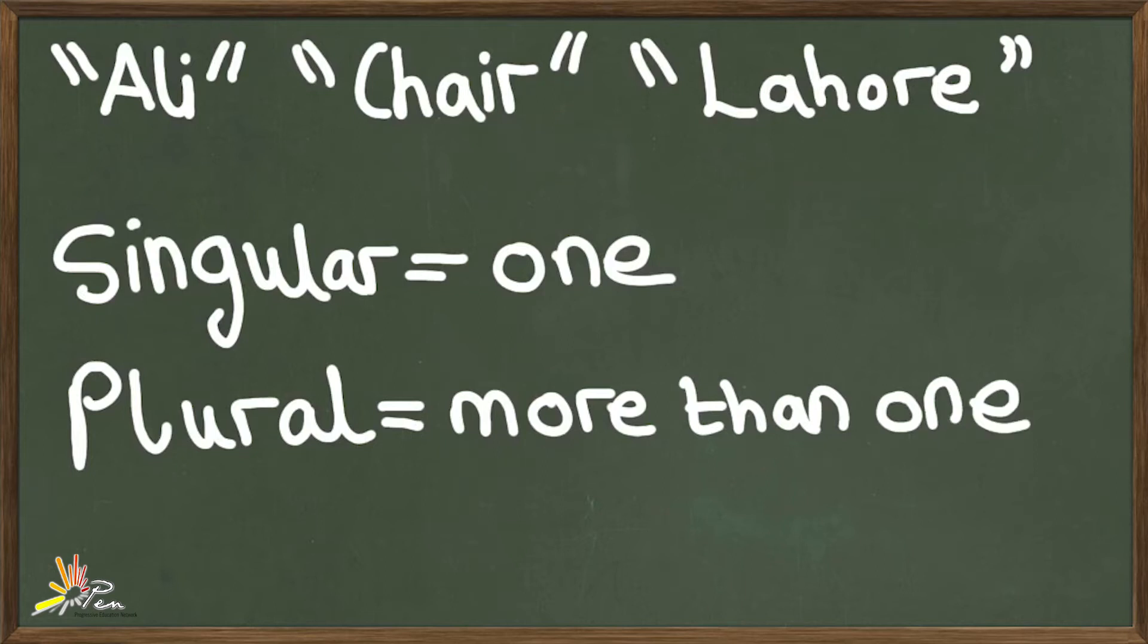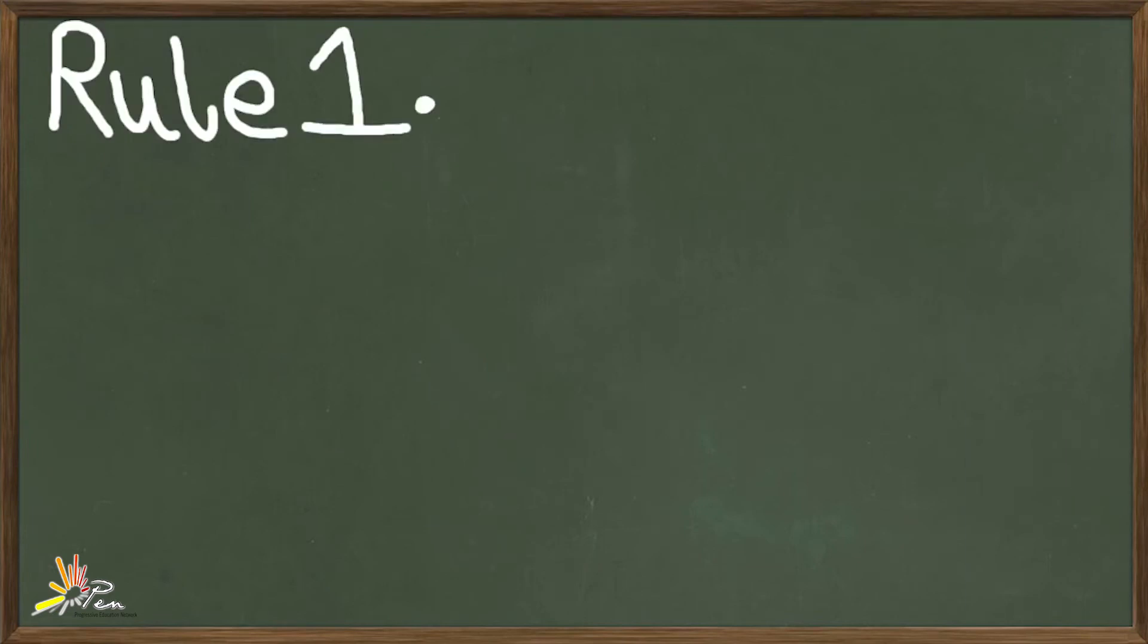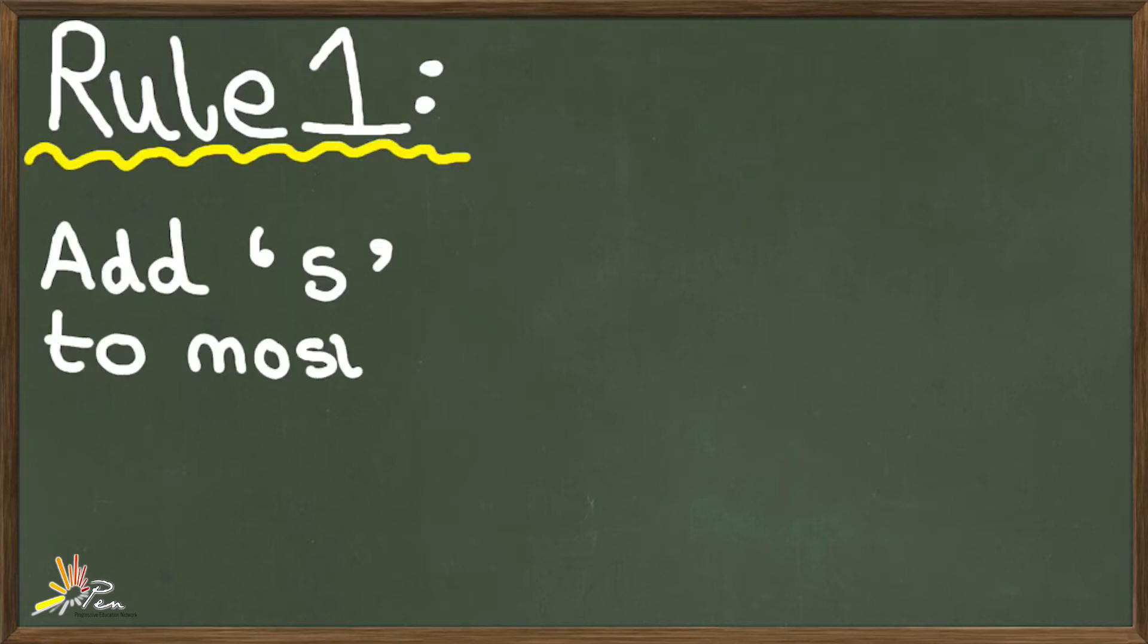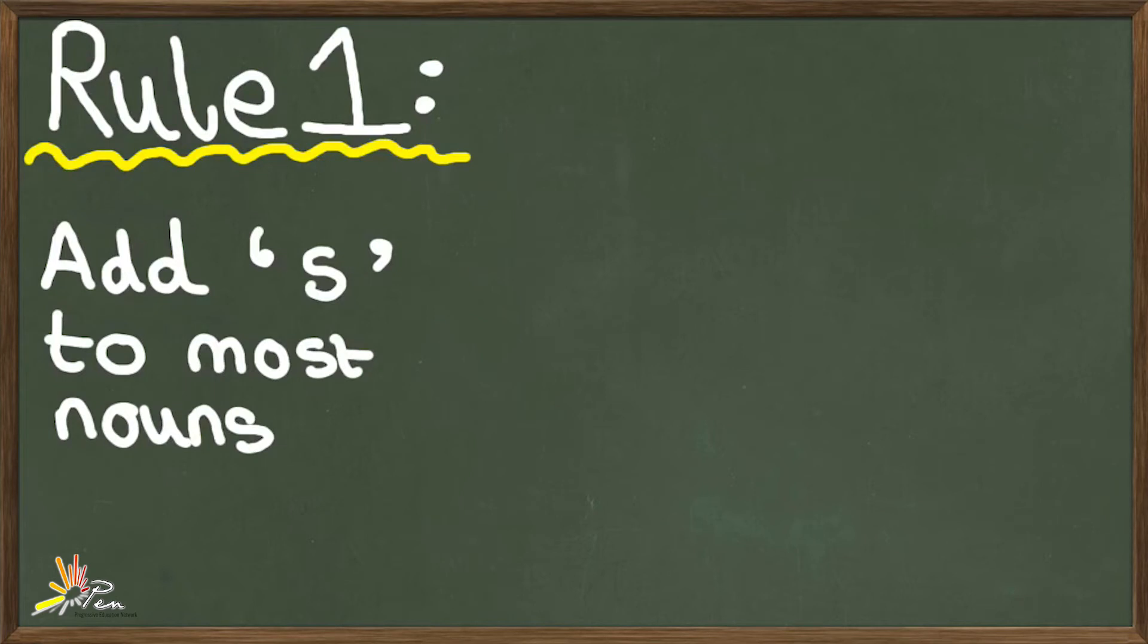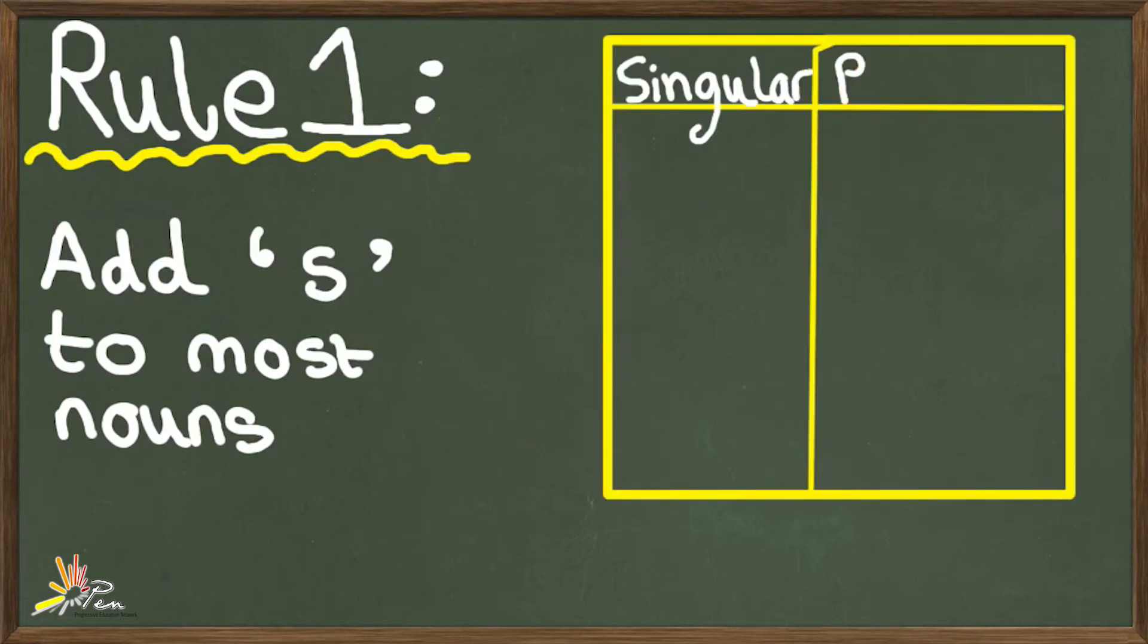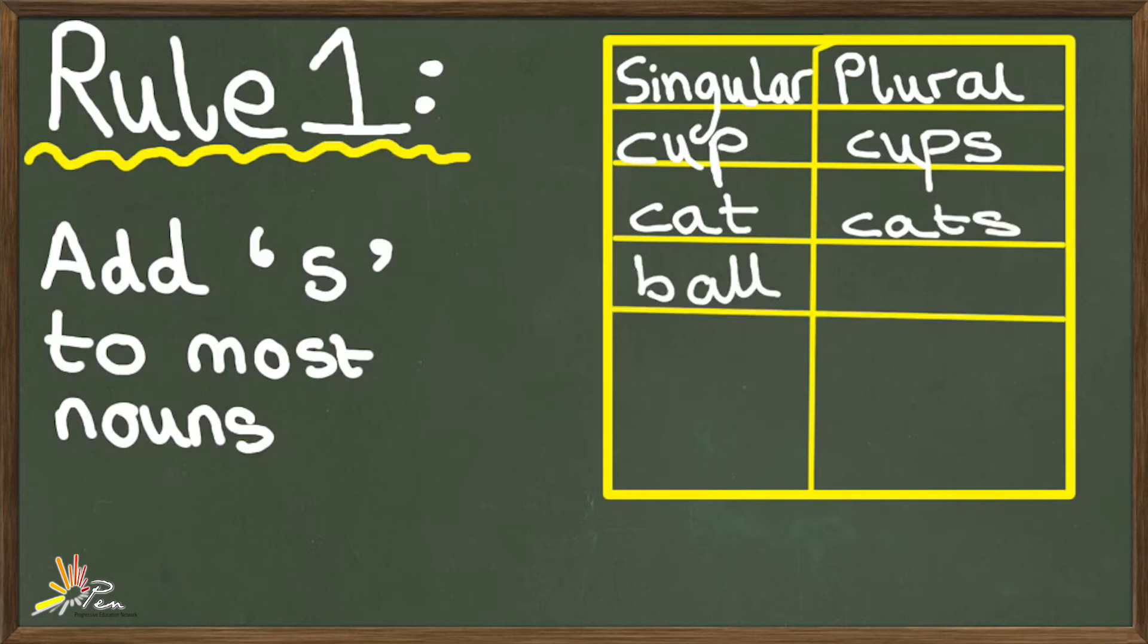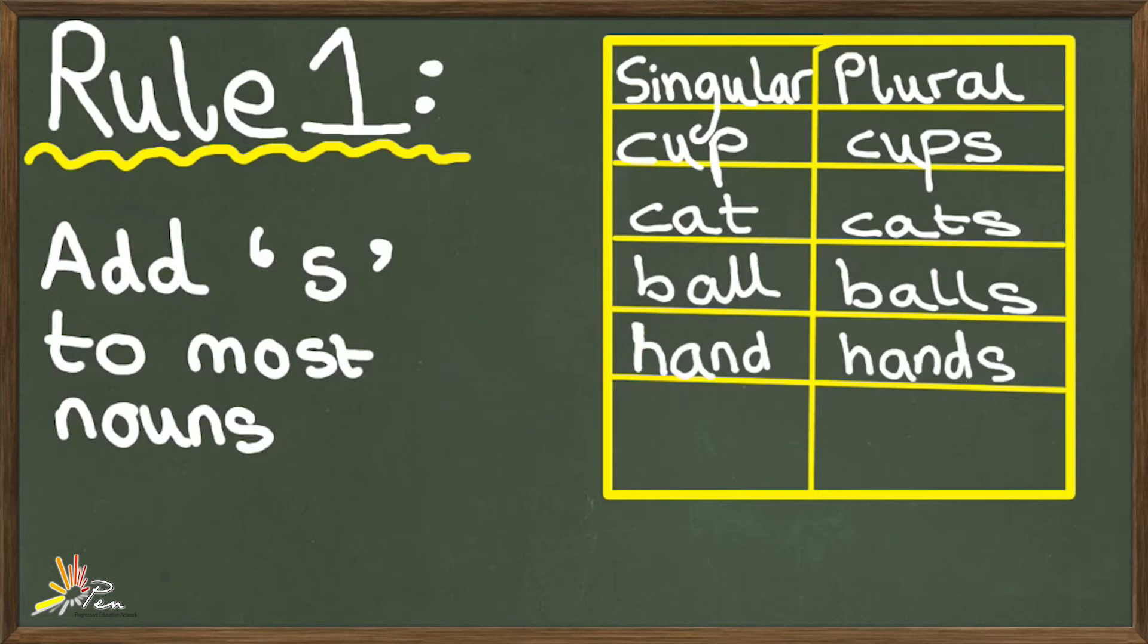To turn a singular noun to its plural form, there are different rules which will be explained in this video. The first rule to turn a singular noun to its plural form is to add S to the noun. This rule is for most nouns. Let's look at some examples. Take a moment to understand this rule.